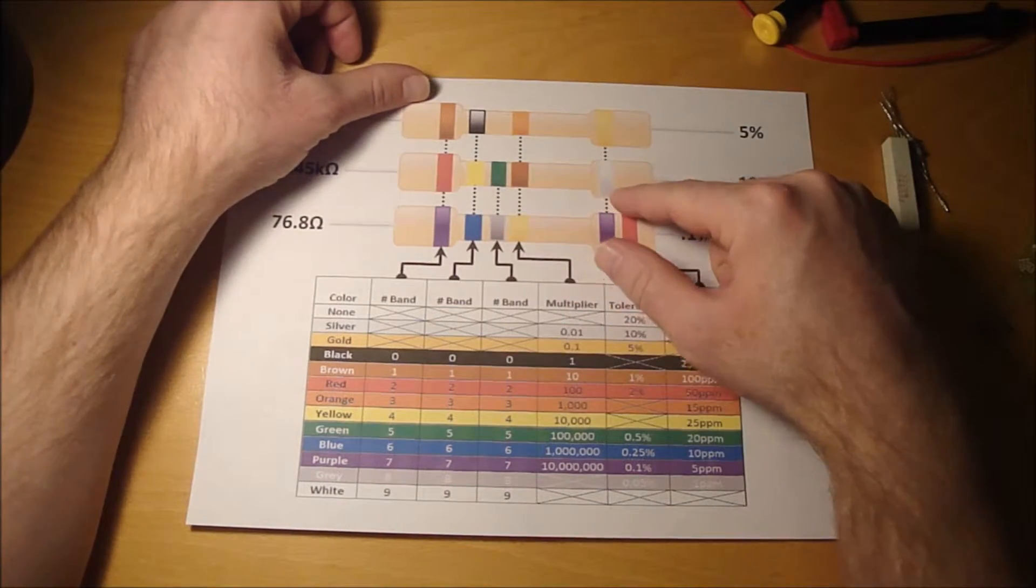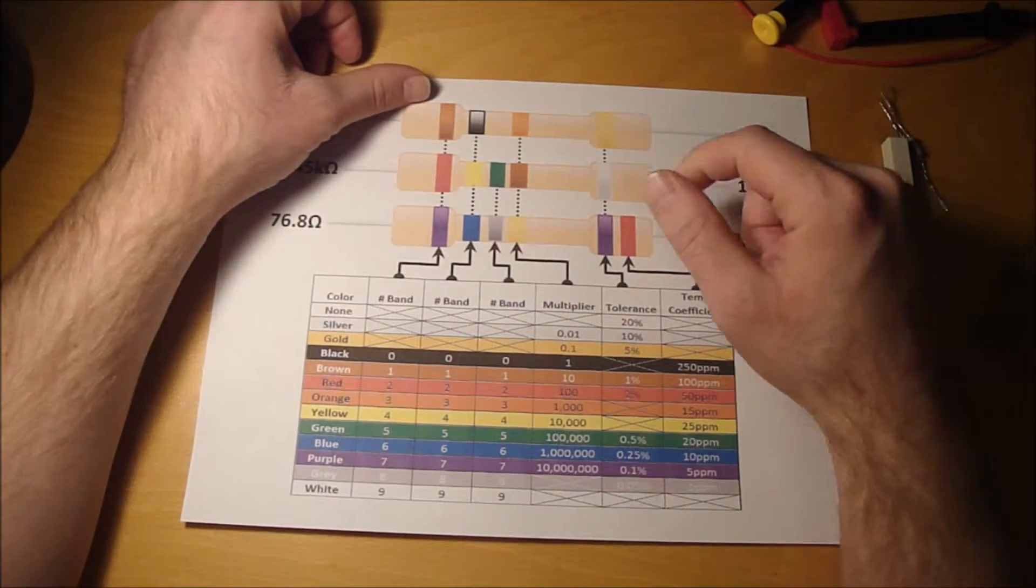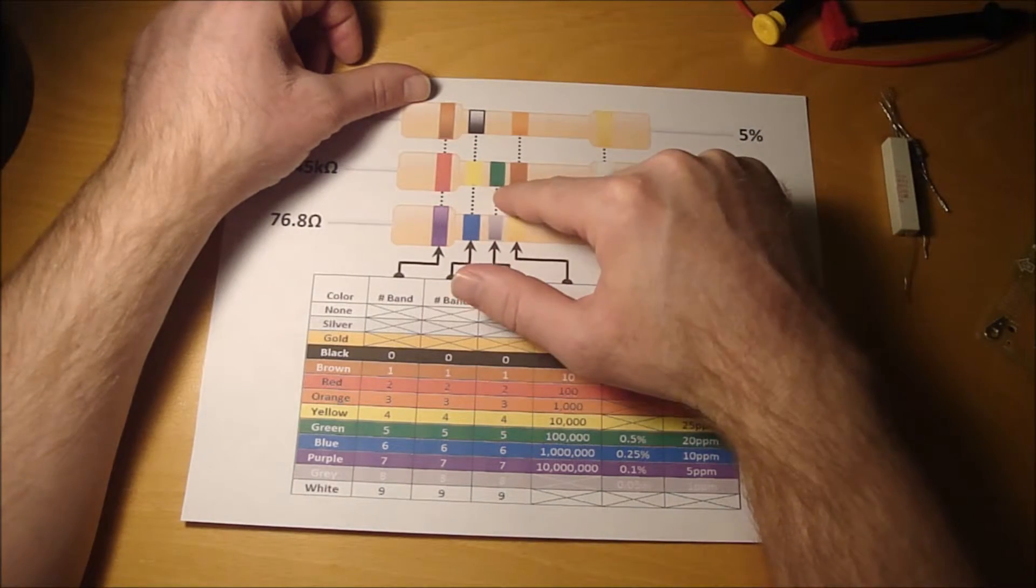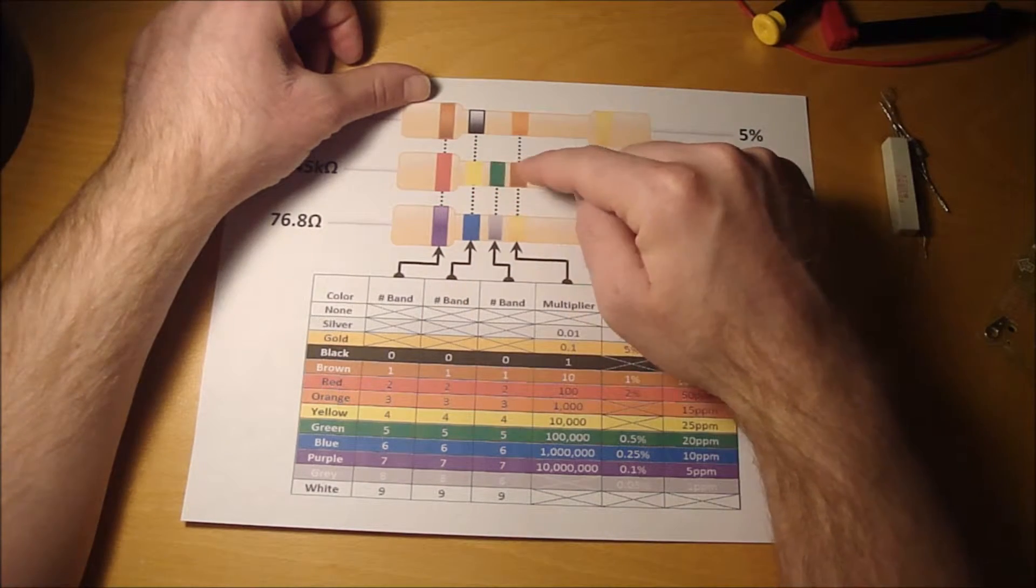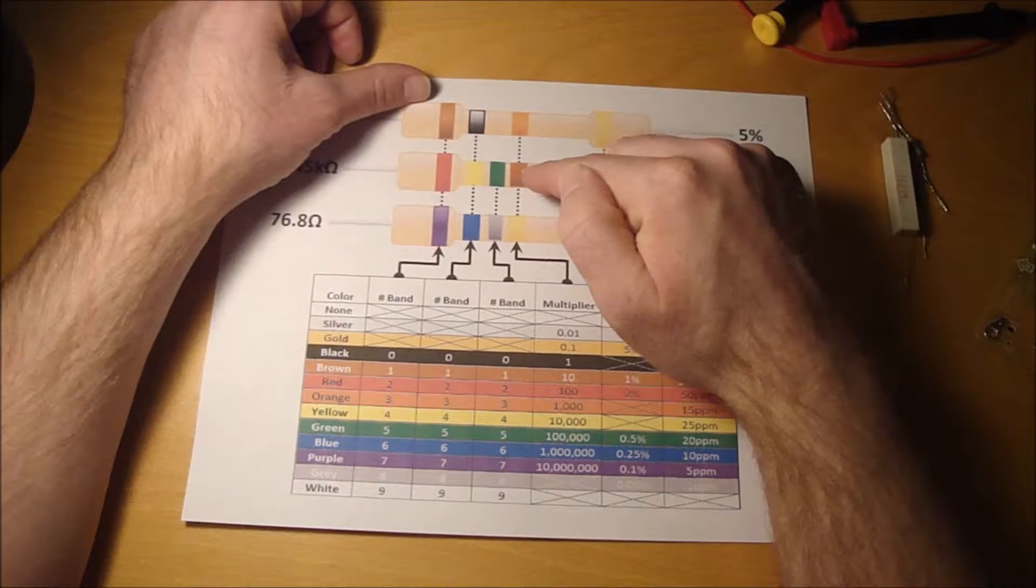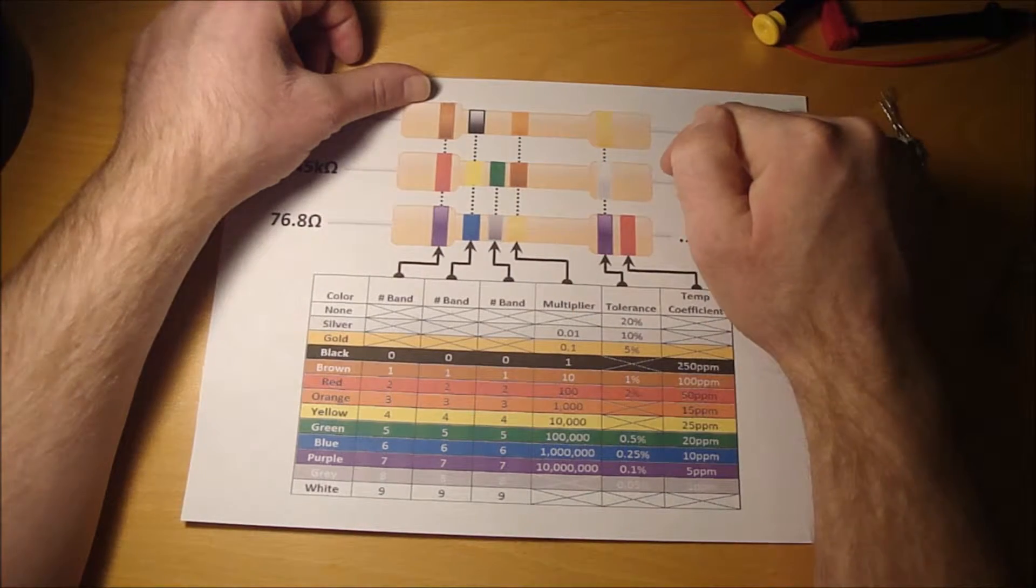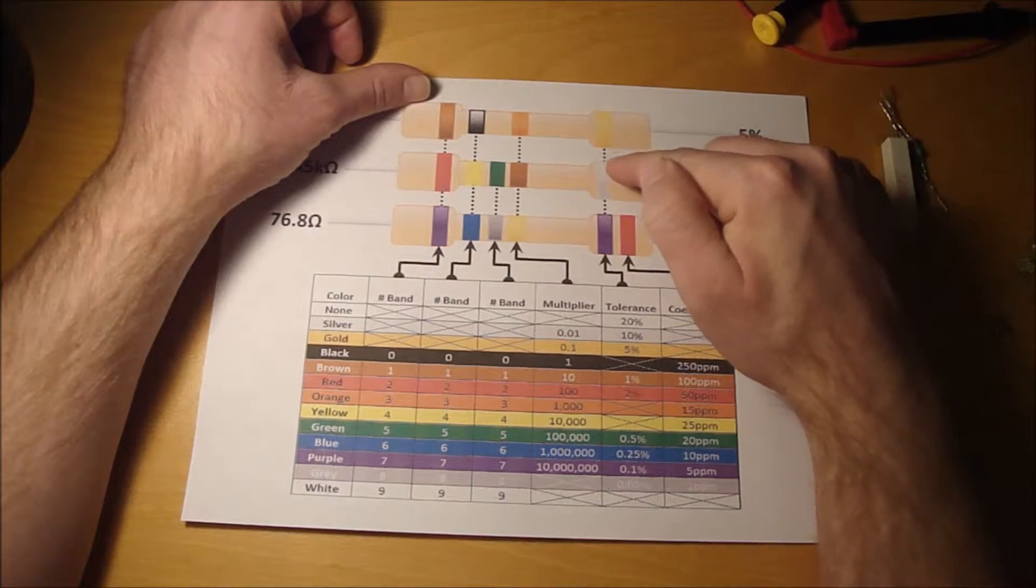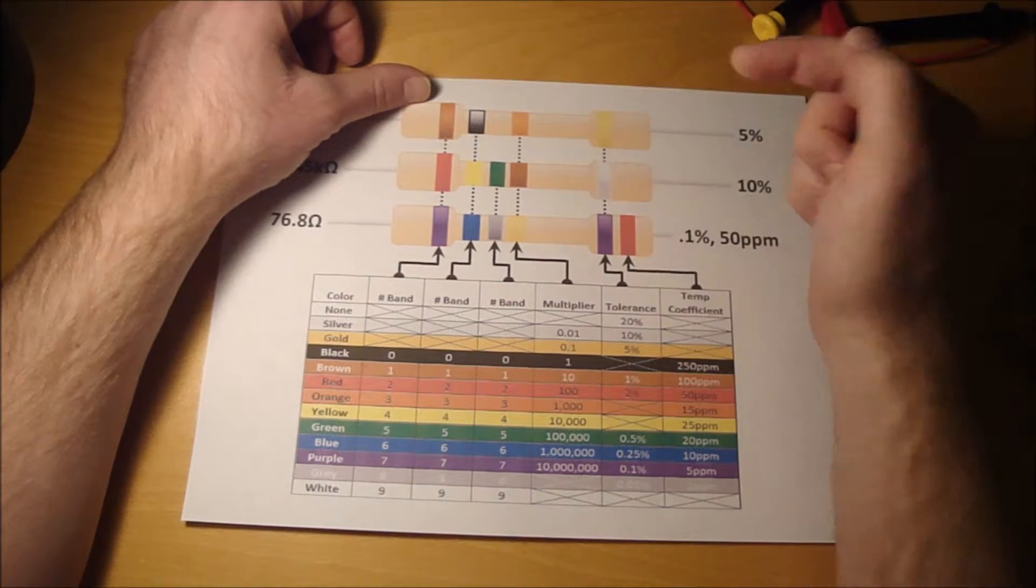So right here is a five band resistor. The first three bands are the number bands. And then the fourth one is the multiplier. And then you've got your gap, and then you've got your tolerance band.